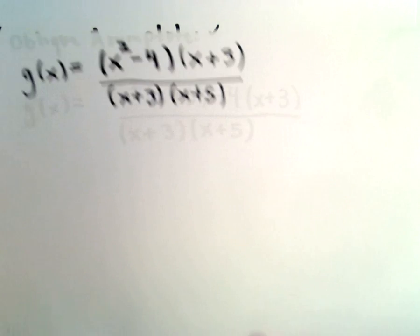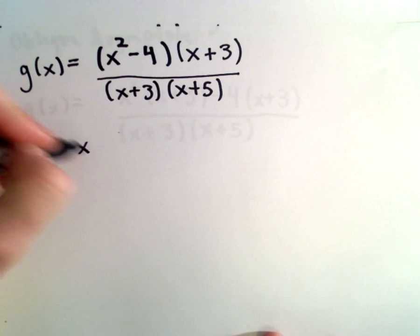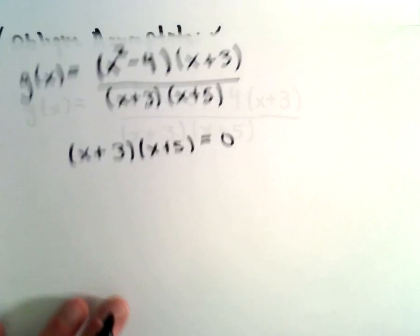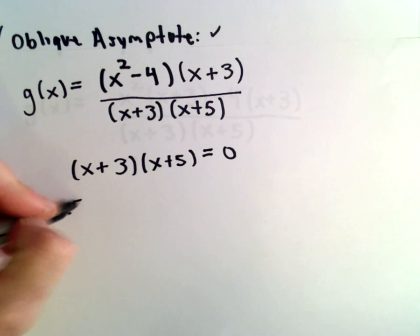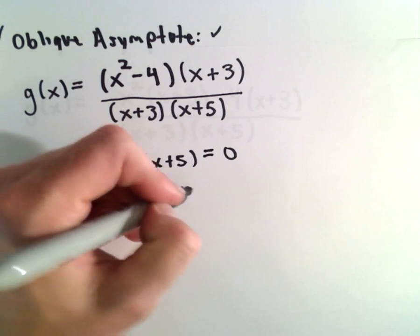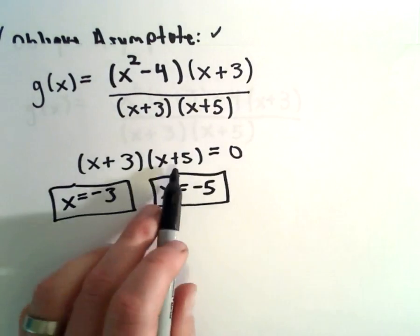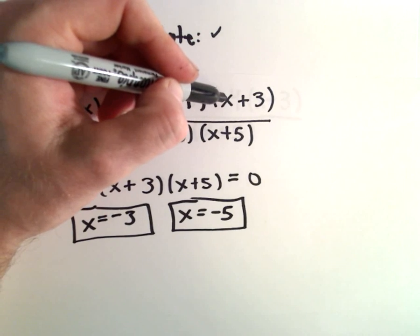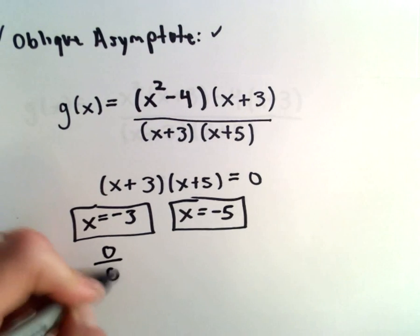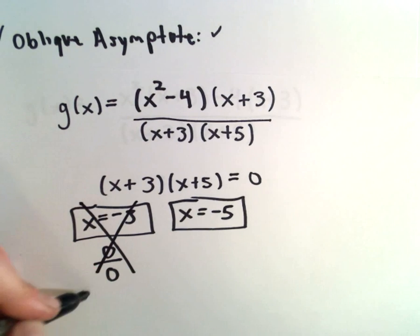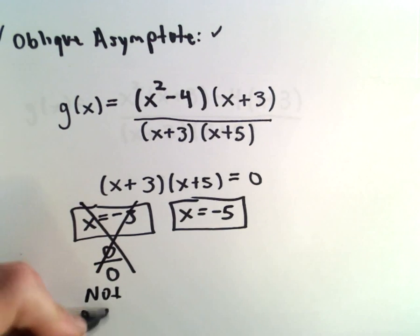To get the vertical asymptotes, I'm going to take the denominator, set that equal to 0. We'll get x equals negative 3 as a solution from our first factor, and x equals negative 5 from our second factor. But if we put negative 3 into the numerator, we'll get 0 in both numerator and denominator.